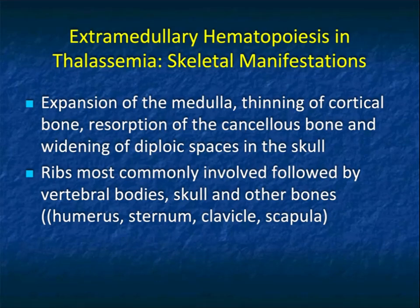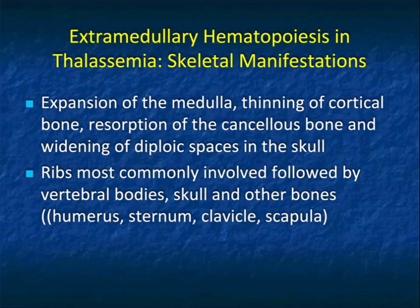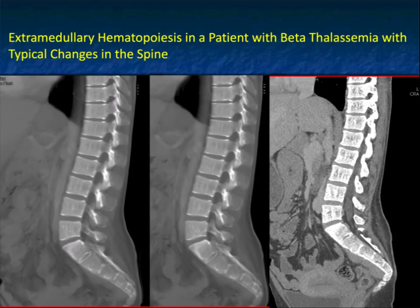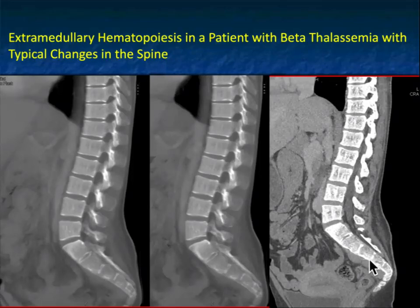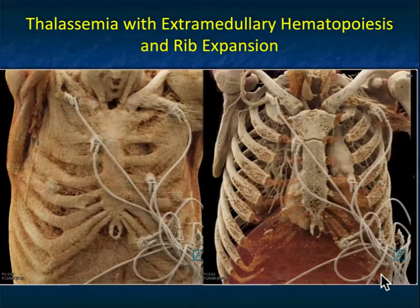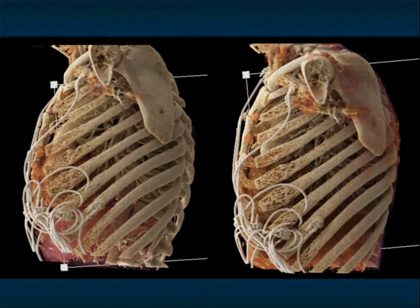In terms of skeletal manifestations, what you're visualizing is expansion of the medulla, thinning of the cortical bone, and resorption of the cancellous bone with widening of the diploic spaces in the skull. The ribs are most commonly involved, followed by vertebral bodies, skull, and other bones. In a patient with beta thalassemia, you can see coarse changes in the spine and coarse trabeculations. At L4-5, extramedullary hematopoiesis is nicely shown, looking like nodes. You also see it in the sacrum, with rib expansion and sternal involvement best shown on texture mapping.